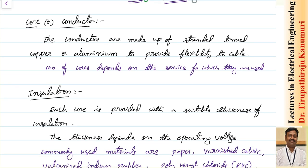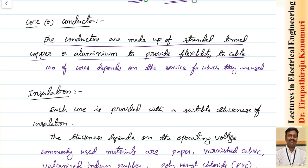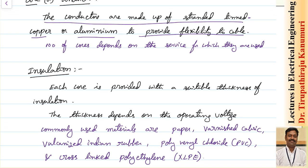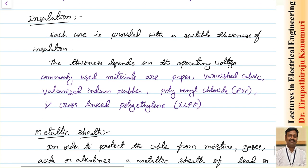The core or conductor is made of stranded tinned copper or aluminium to provide flexibility, since stranded conductors are more flexible during laying. Tin is applied over the copper to prevent interaction with the surrounding insulating material. The number of cores depends on the service — single core, two core, three core, or four core cables are available depending on the application.